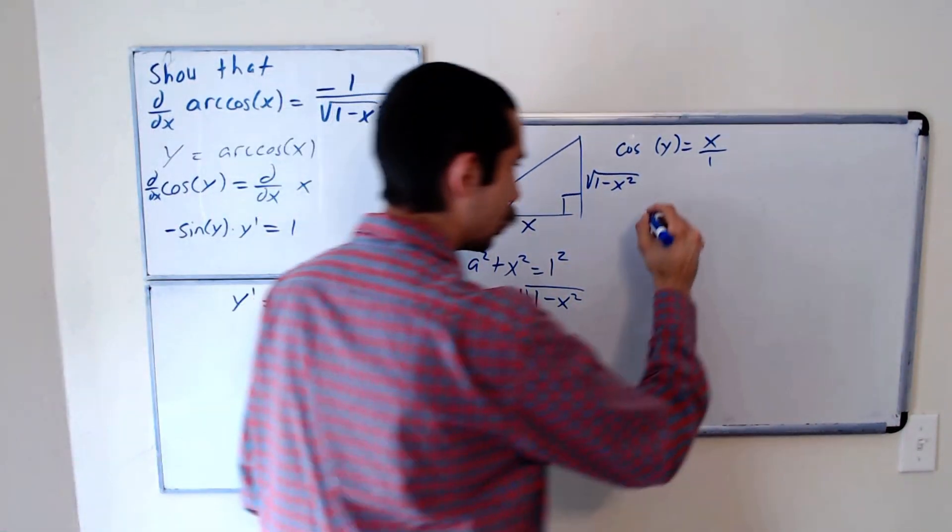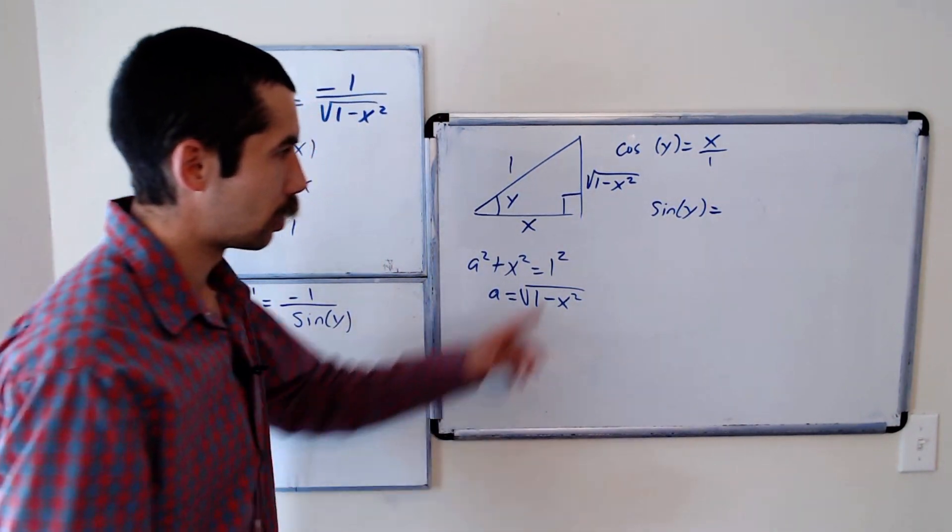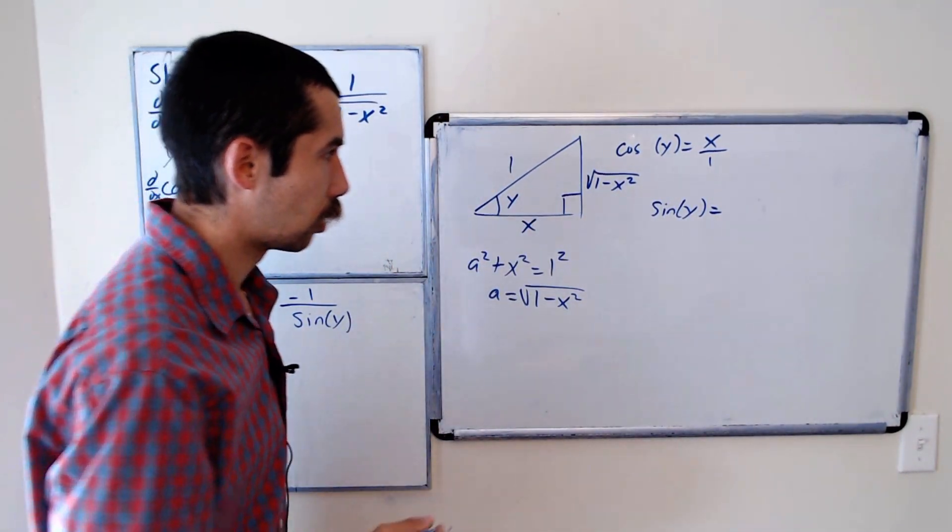And so we could get sine of y. Sine of y is equal to opposite over hypotenuse.